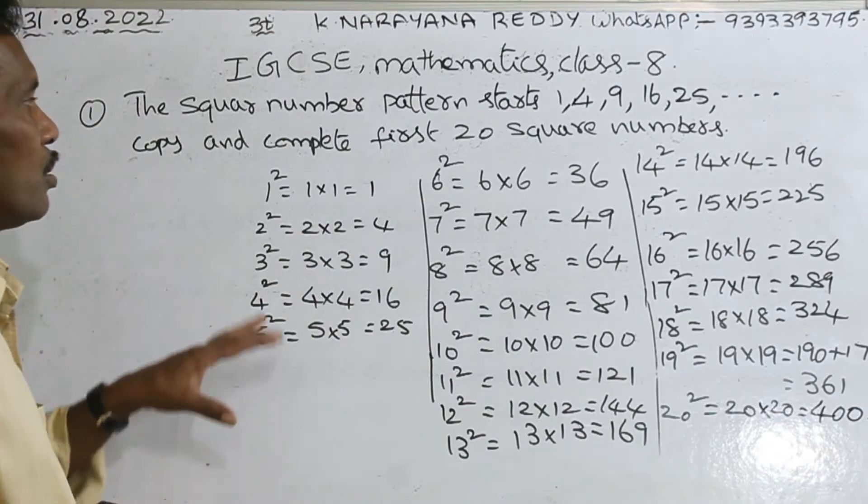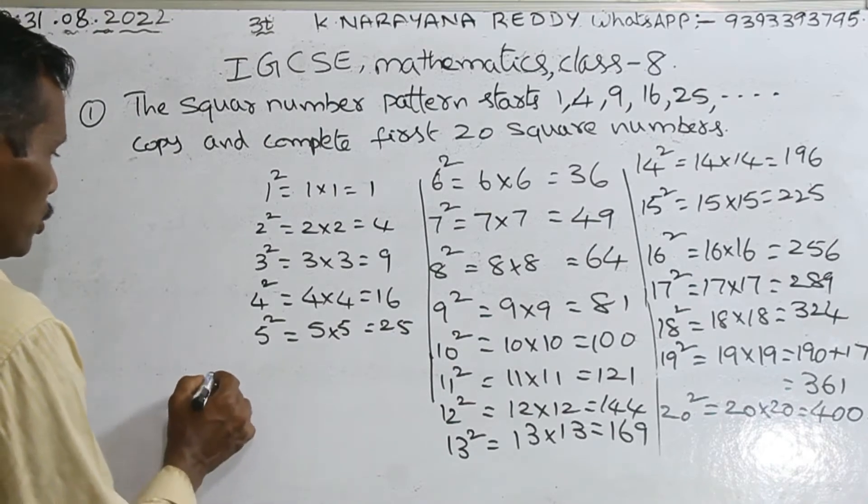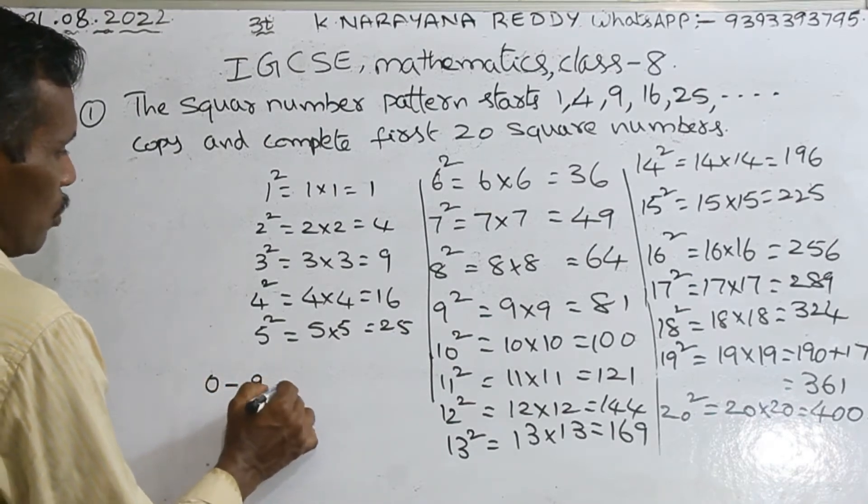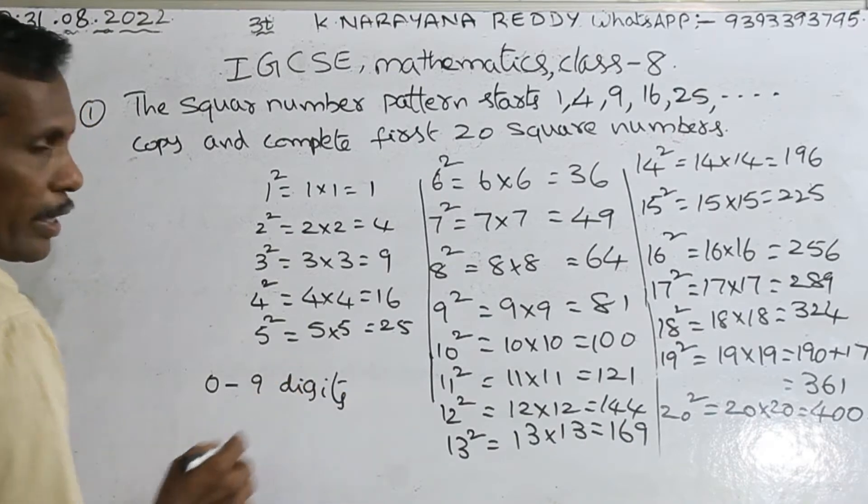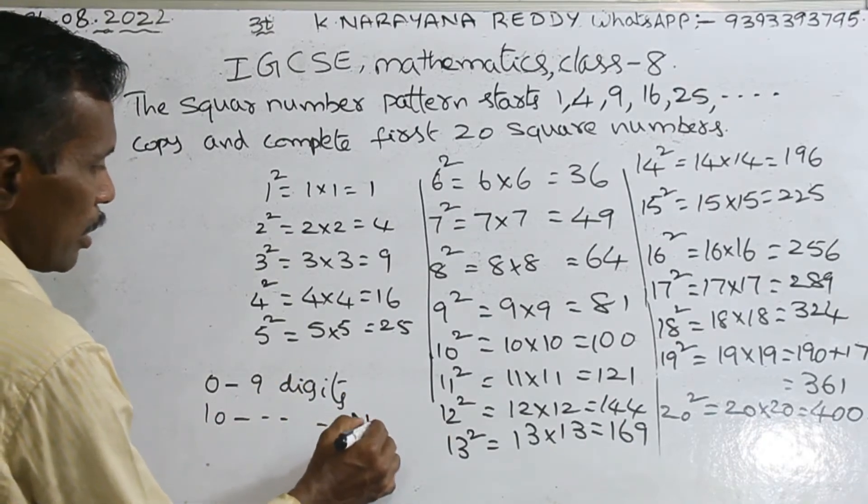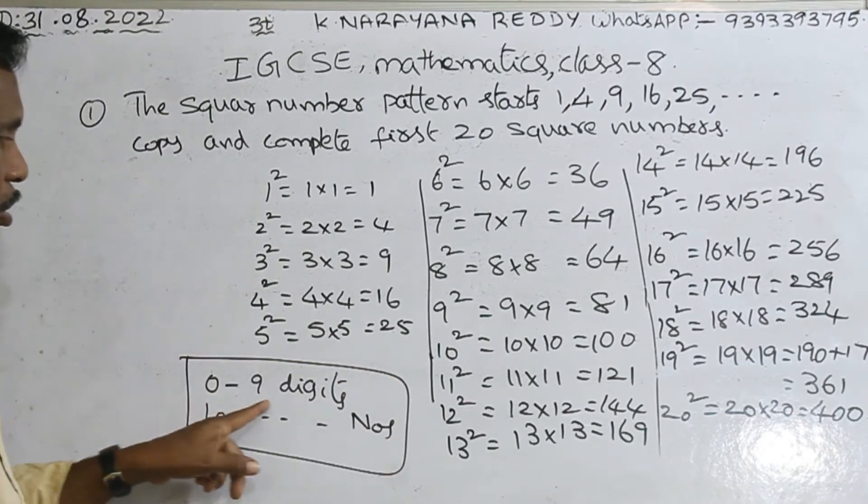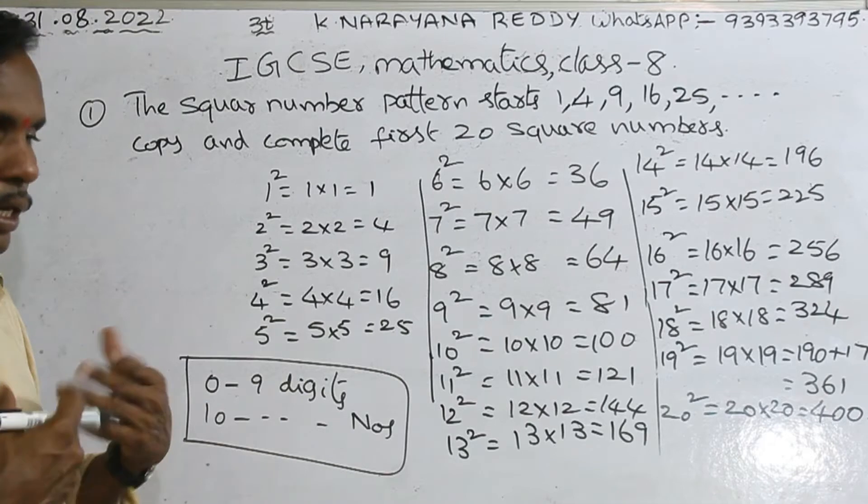So these are the squares of numbers up to 20. But 0 to 9 are called digits. 10 and above are called numbers. Please remember this. These are called digits, these are called numbers.